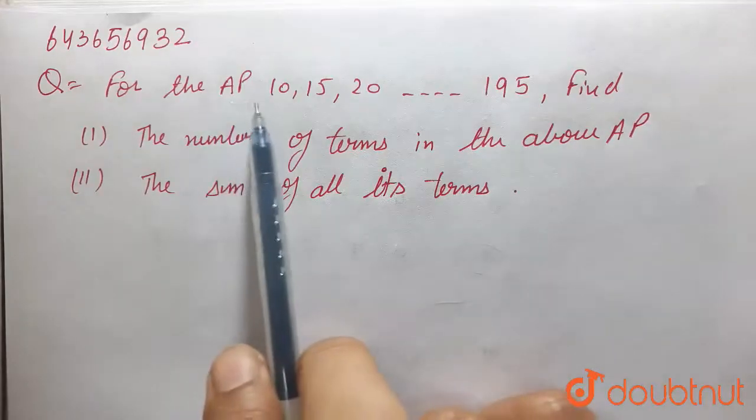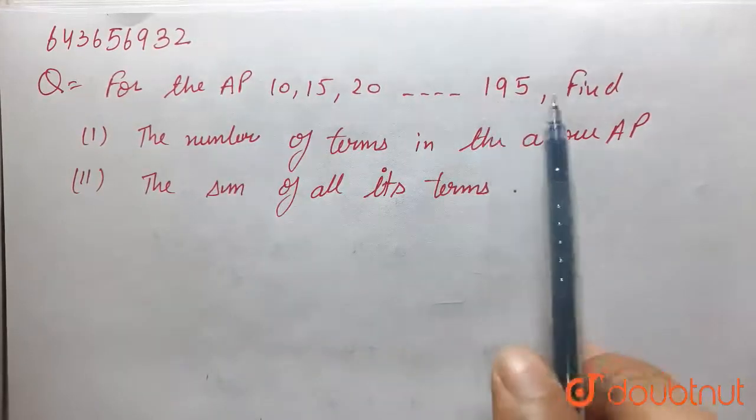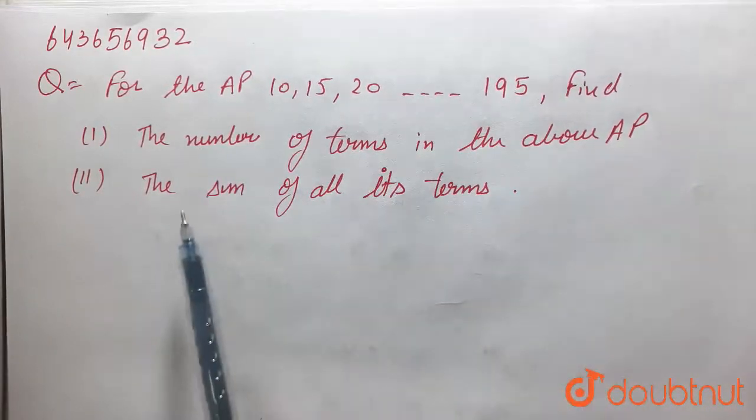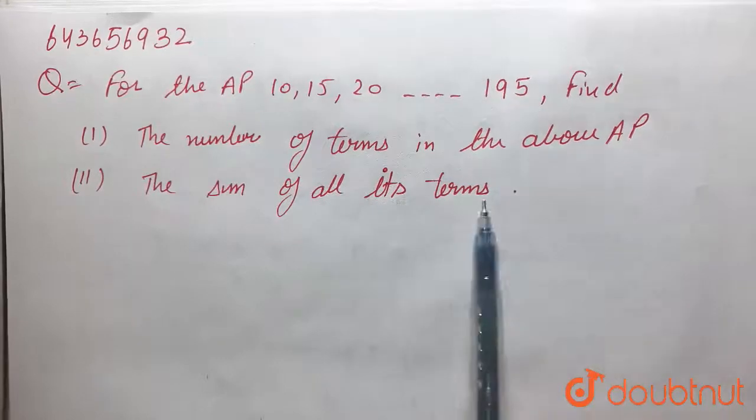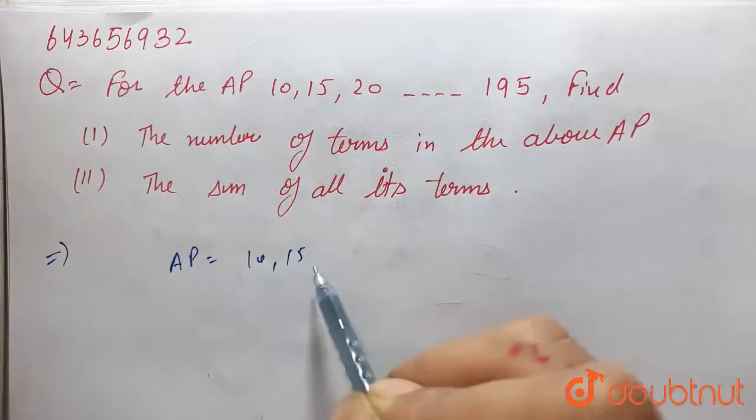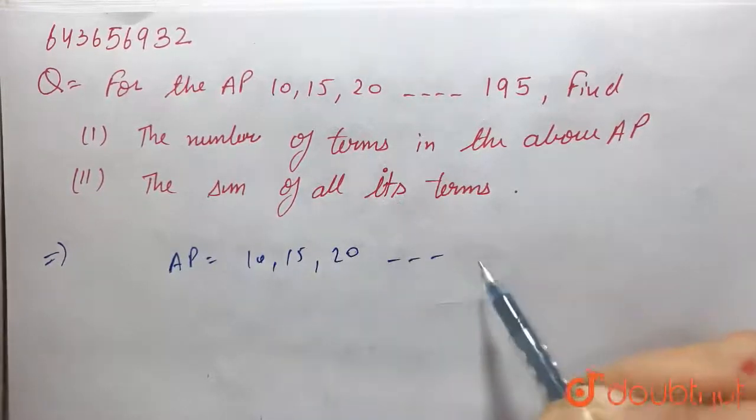Our question is for the AP: find the number of terms in the above AP and the sum of all its terms. Here the AP is given as 10, 15, 20 up to 195.